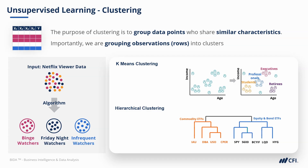In this example we're looking at different ETFs. At the first split, we split ETFs into two groups of assets with similar return movements. As a result, one group contains commodity ETFs and the other contains equity and bond ETFs. We keep splitting each group until the subgroups only contain similar characteristics.